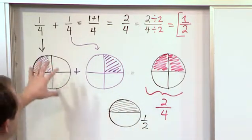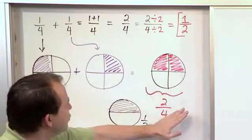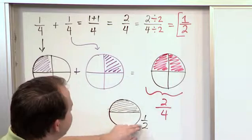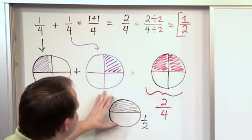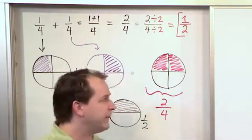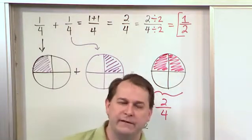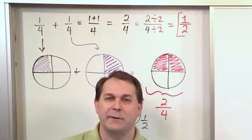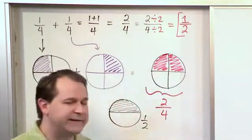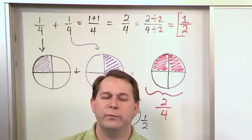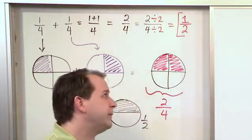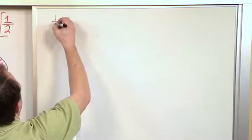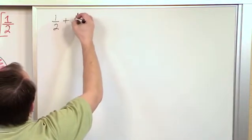So what I'm trying to say is: sometimes you add fractions and you get an answer that is totally correct, but you can simplify it into a simpler-looking fraction. This fraction and this fraction represent the same amount of pizza. If somebody asks you, 'Do you want half a pizza or 2 fourths of a pizza?' — there's no right answer, because it's exactly the same amount. Always when we add fractions, we want to simplify the answer. So that's what we're going to be doing in all of these problems. What if we have 1 half plus 1 half?